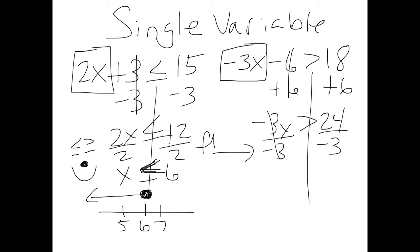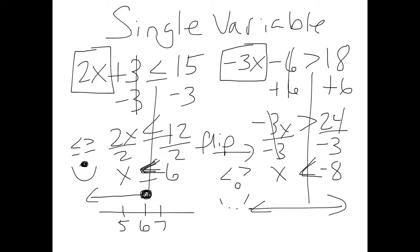Anytime you multiply or divide by a negative, you must flip the inequality. So our inequality flips to less than. 24 divided by -3 is -8. This uses the open-circle face, so at -8 we have an open circle — with -9 to the left and -7 to the right. The arrow points to the left, so we draw to the left. Those are single variable inequalities.